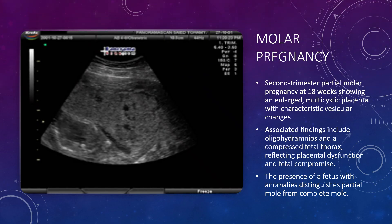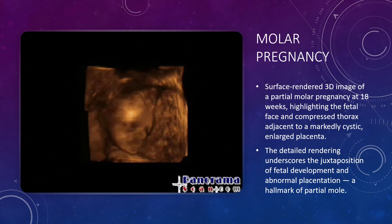Here is a second trimester partial mole pregnancy at 18 weeks. Notice the enlarged multi-cystic placenta with characteristic vesicular changes. We can also see oligohydramnios and a compressed fetal thorax — signs of placental dysfunction and fetal compromise. The key distinction from a complete mole is right here: the presence of a fetus, often with anomalies, alongside the abnormal placenta. A surface-rendered 3D image of the same case clearly shows the fetal face and compressed thorax sitting right next to a markedly cystic enlarged placenta, driving home the hallmark juxtaposition of ongoing fetal development and abnormal placentation.